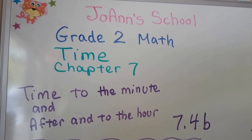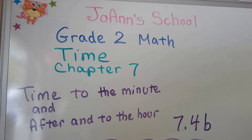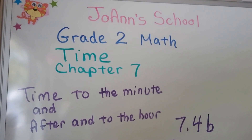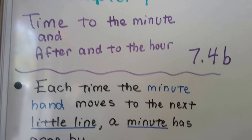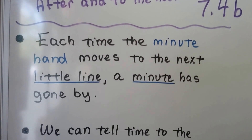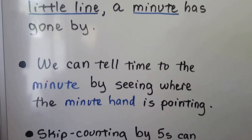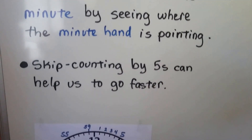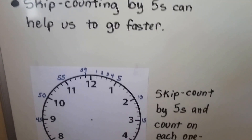This is the second part of lesson 7.4, lesson 7.4b. We're going to talk about time to the minute and using the words after and to the hour. We know that each time the minute hand moves to the next little line, a minute has gone by. We can tell time to the minute by seeing where the minute hand is pointing, and we can skip count by fives to go faster.